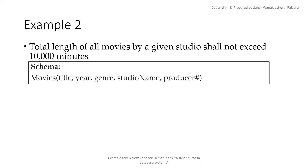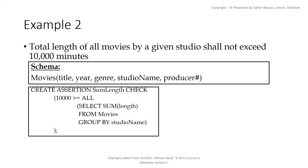We have another example from the textbook 'A First Course in Database Systems.' Here we have a Movie table with attributes: title, year, genre, studio name, and producer certificate number. The assertion ensures that the total length of all movies for any given studio should be less than or equal to 10,000. The assertion's subquery calculates the sum of movie lengths grouped by studio, and the condition checks that 10,000 is greater than or equal to all such totals. If any single tuple has a total length exceeding 10,000, the modification will be rejected.